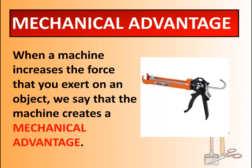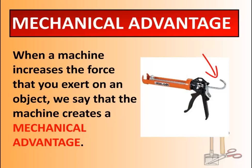When a machine increases the force you exert — such as in this caulking gun — we say that the machine creates a mechanical advantage. When I put a tube of sealant in here and pull back on the hook, every time I pull the trigger it engages a spring, and that spring forces the round part to push on the bottom of the tube and force the sealant out. This handle creates a mechanical advantage because I don't have to squeeze the stuff out — the machine does it for me.